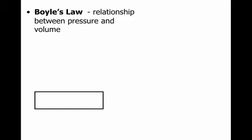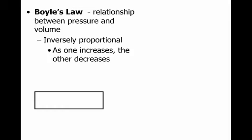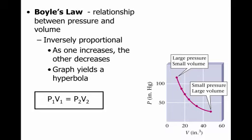Now we can look at relationships between some of these variables that we've talked about. We can measure the pressure of a gas, the volume of a gas, the temperature of a gas, and we can also look at how many moles of gas are present. The scientists that studied this came up with some relationships because they noticed these patterns repeating themselves.